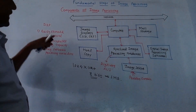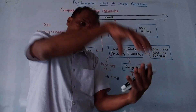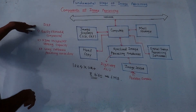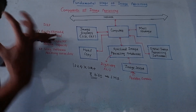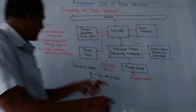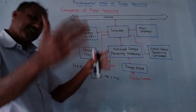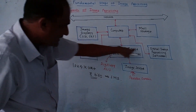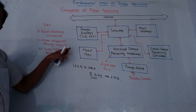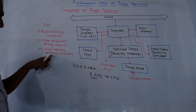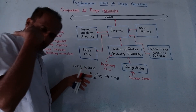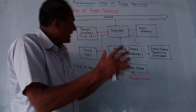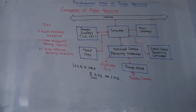What are the advantages of digital image processing? Once an image is captured and converted into digital form, it can be easily stored and compressed. Specialized image processing hardware increases storage capability. The third advantage is software processing — using software, we can easily process and make the required changes in an image.